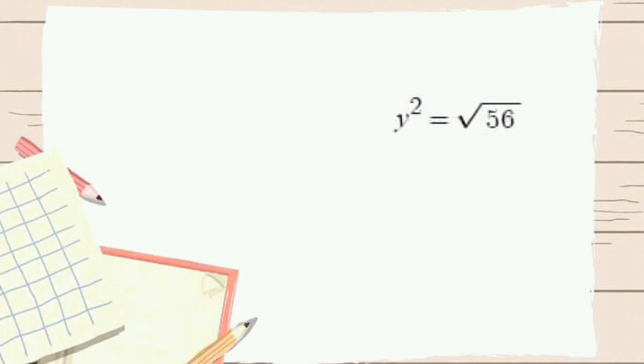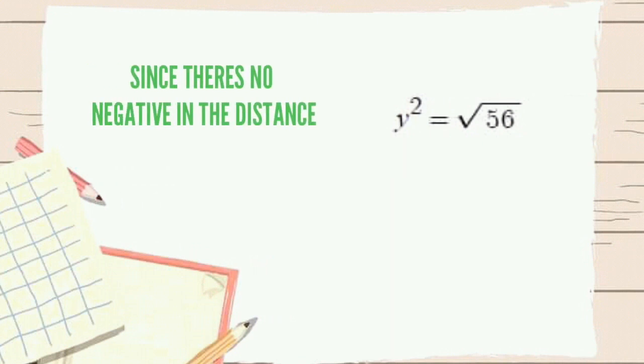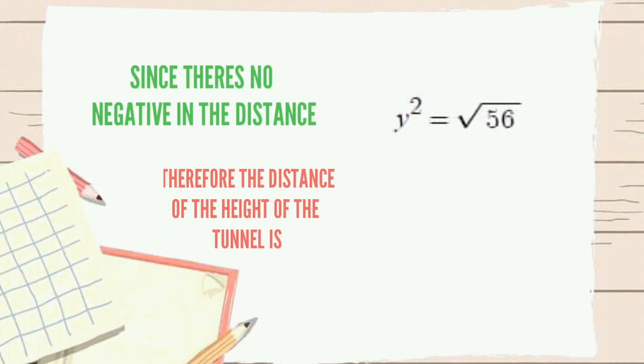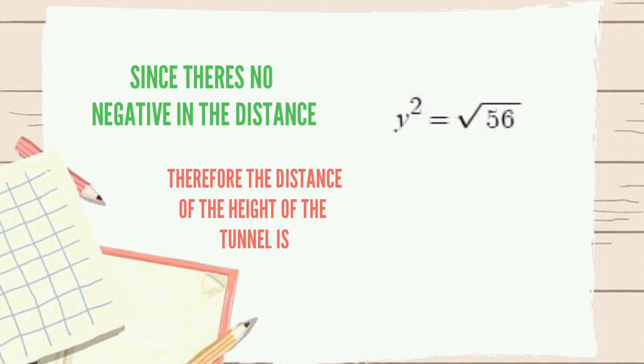But then, we are just going to get 2 decimal places so we just consider 7.48. Since there is no negative in distance, therefore, the height of the tunnel is 7.48 feet.